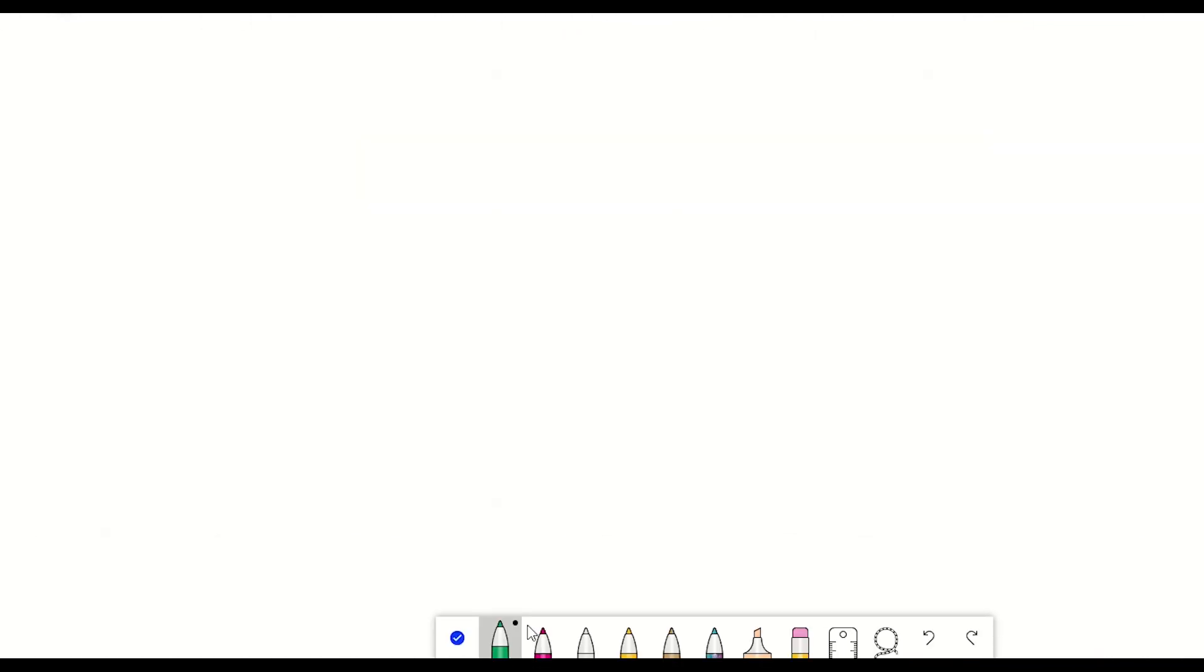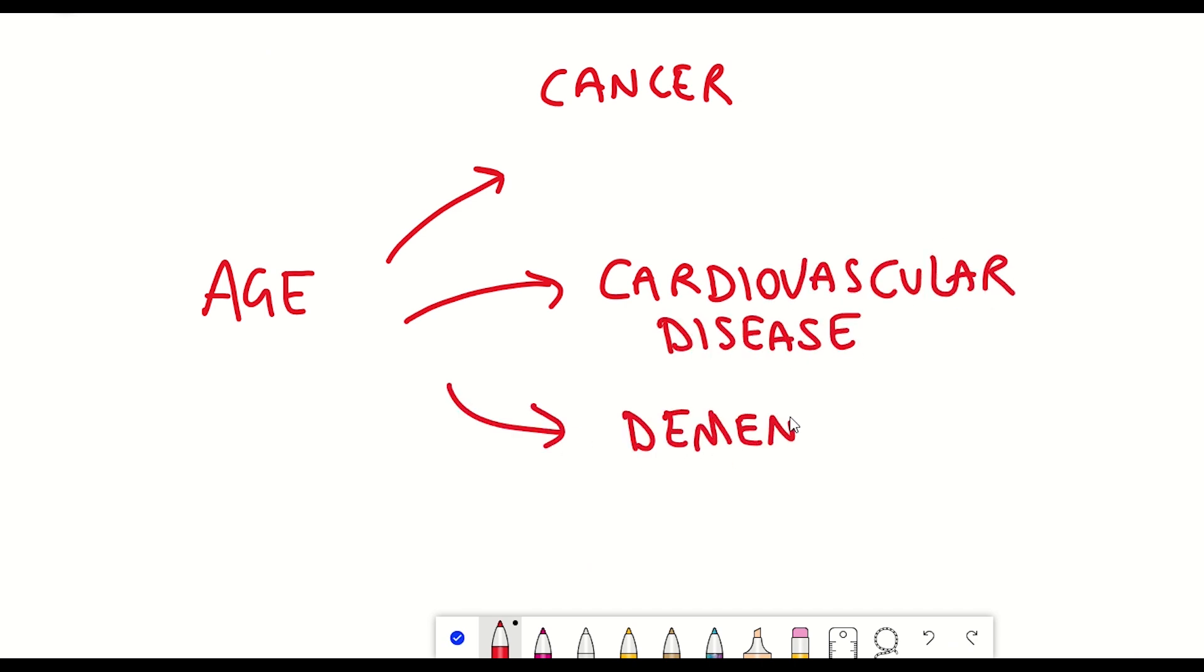One way of dealing with this is to treat these different diseases separately. This places a big burden on the healthcare sector. An alternative strategy would be to target the aging process itself and alleviate the chances of developing multiple morbidities.